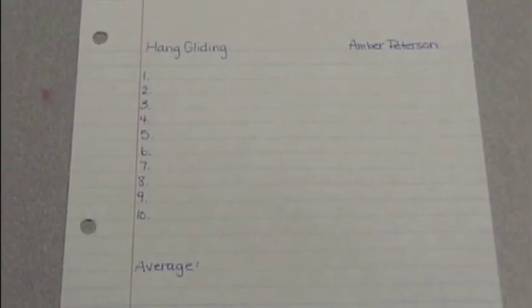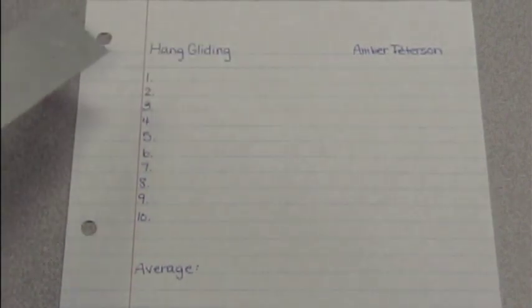The next step is today you'll need a piece of paper and please label it hang gliding with your name and one through ten with the word average. This will be filled out for the length of your flights and then later you'll calculate the average of your flight. So please fill out a worksheet.